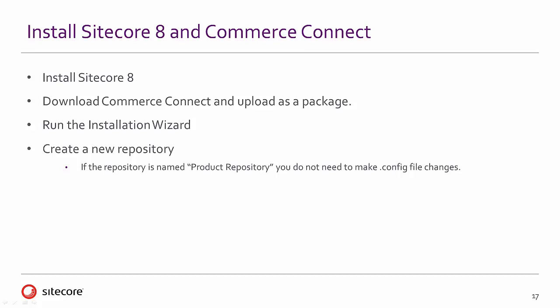Our first steps are to install Sitecore 8, download Commerce Connect and upload that as a package, run the installation wizard, and create a new repository. I already have Sitecore 8 installed. I'm going to simply run the Commerce Connect package through the installation wizard and go through the steps of creating a new repository.